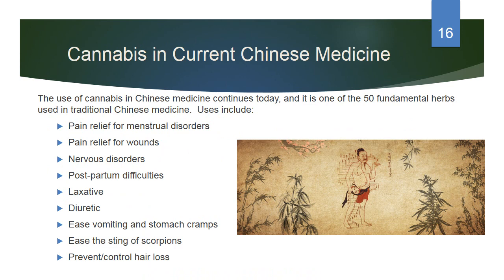Cannabis in Chinese medicine is still prevalent today and is one of the 50 fundamental herbs used in traditional Chinese medicine. Uses include pain relief for menstrual disorders, pain relief for wounds, nervous disorders such as anxiety, postpartum difficulties, use as a laxative and diuretic, easing vomiting and stomach cramps, easing the sting of scorpions, and preventing or controlling hair loss.